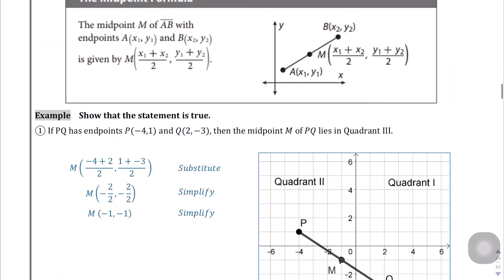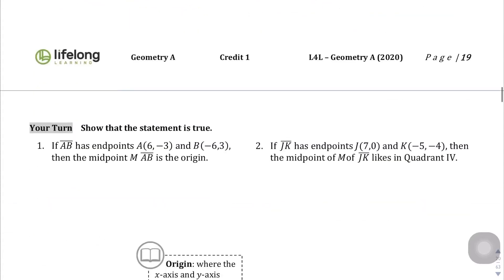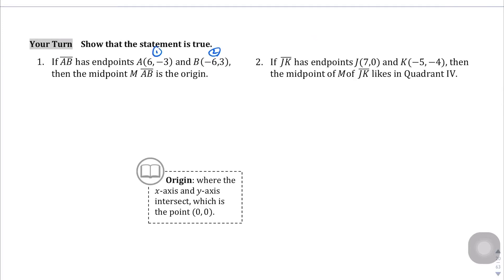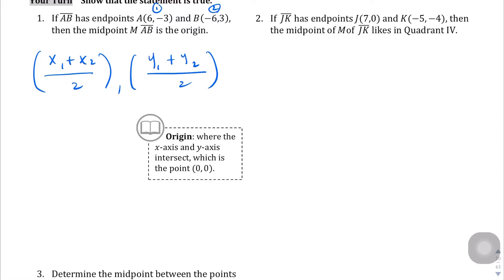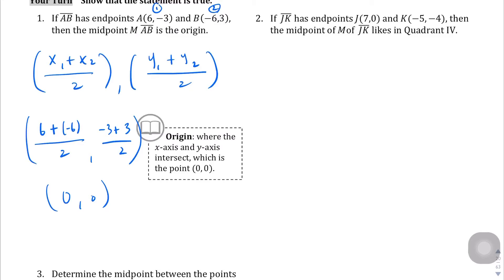Finding midpoints on the coordinate plane. We use the midpoint formula: X1 plus X2 divided by 2, and Y1 plus Y2 divided by 2. For question 1: X1 is 6 plus negative 6 divided by 2, which is 0 over 2. Y1 is negative 3 plus positive 3 divided by 2, which is also 0. So the midpoint of these two points is 0, 0.